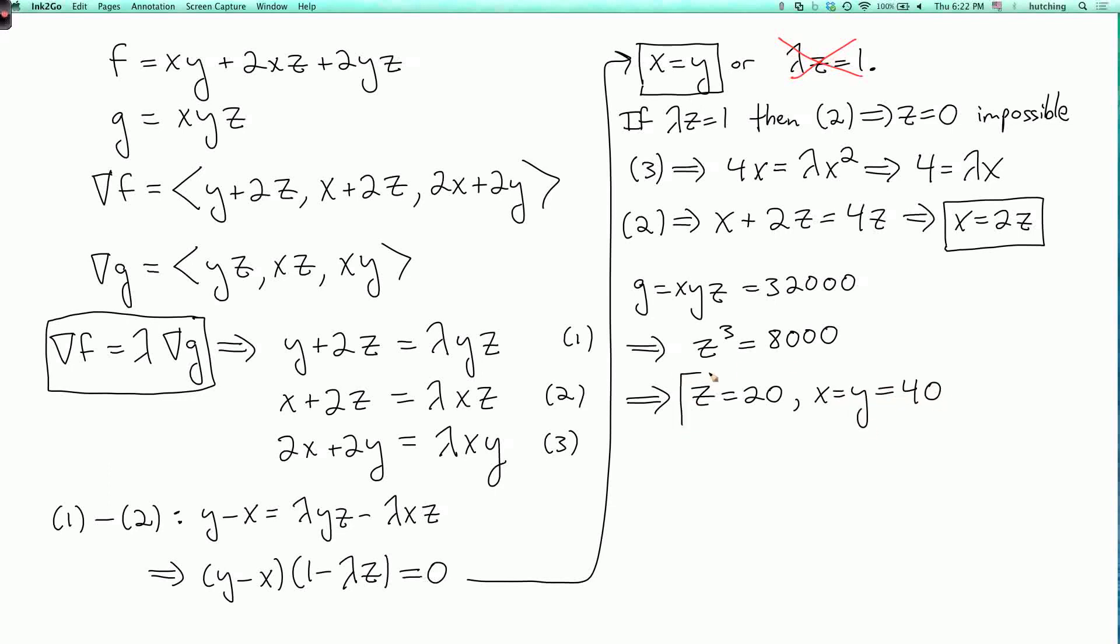So these are the dimensions that minimize the area. So we want the length and the depth to be the same, and we want the height to be half that. So that's the solution to that problem. And notice also that what's lambda? Well, here I have the equation 4 equals lambda times x. And x is equal to 40. So that tells me that lambda is 1 tenth. So in the next lecture segment, I'm going to tell you the significance of the fact that lambda equals 1 tenth.